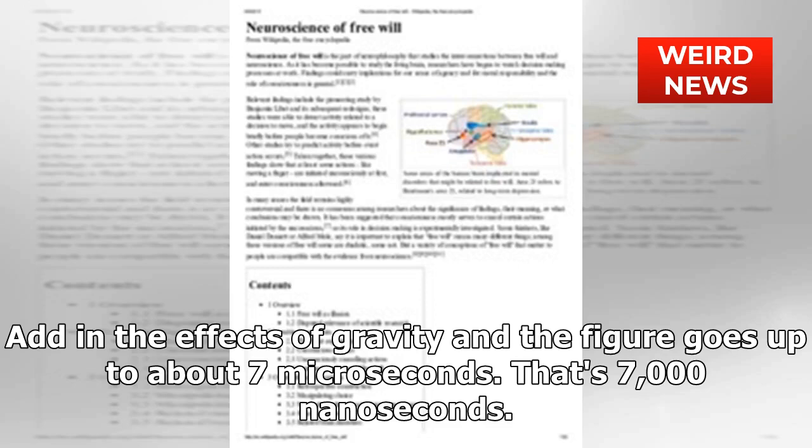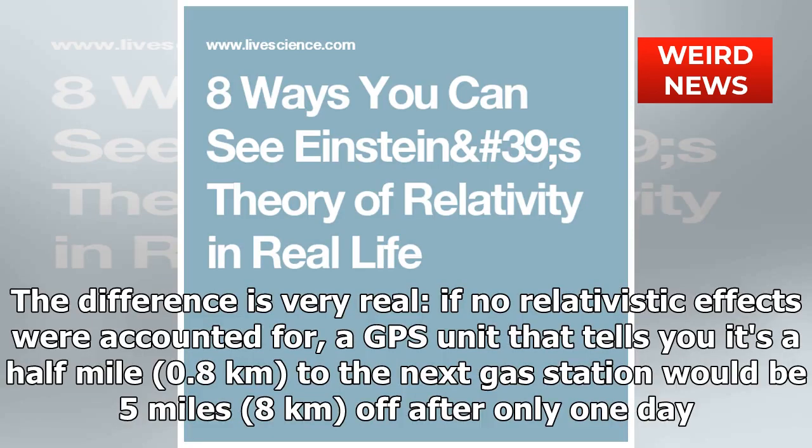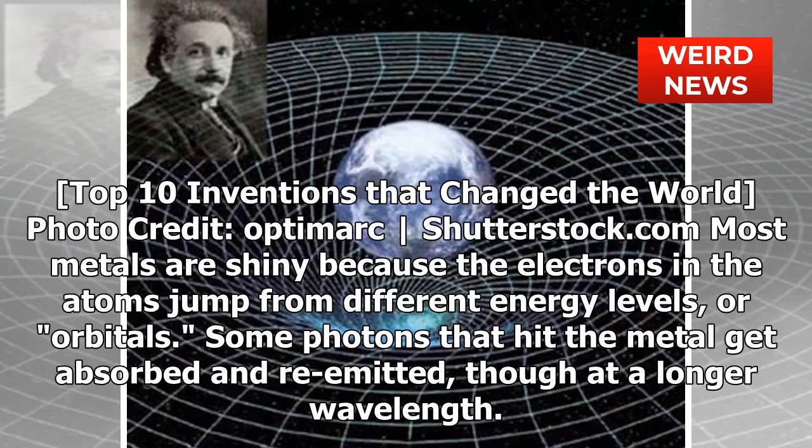Add in the effects of gravity and the figure goes up to about seven microseconds — that's 7,000 nanoseconds. The difference is very real: if no relativistic effects were accounted for, a GPS unit that tells you it's a half mile (0.8 km) to the next gas station would be five miles (8 km) off after only one day.